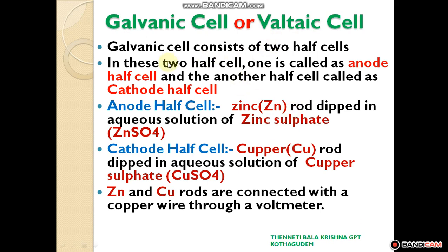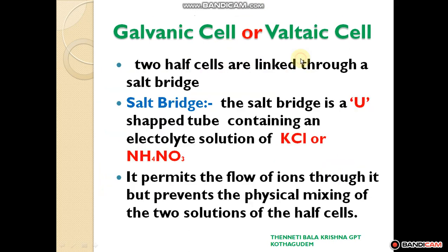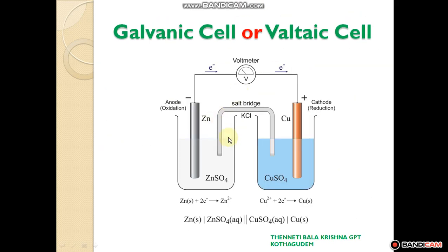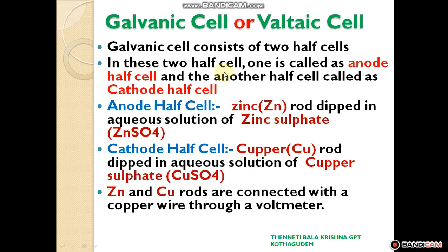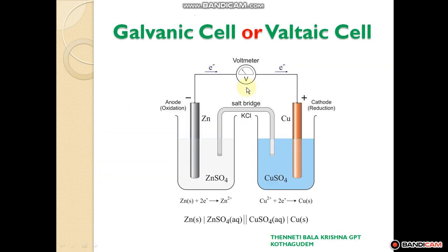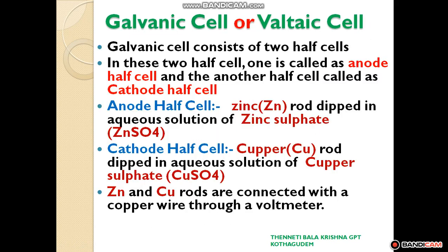Now we discuss the construction of the galvanic cell or voltaic cell. The galvanic cell consists of two half-cells: one is called the anodic half-cell and the other is the cathodic half-cell.